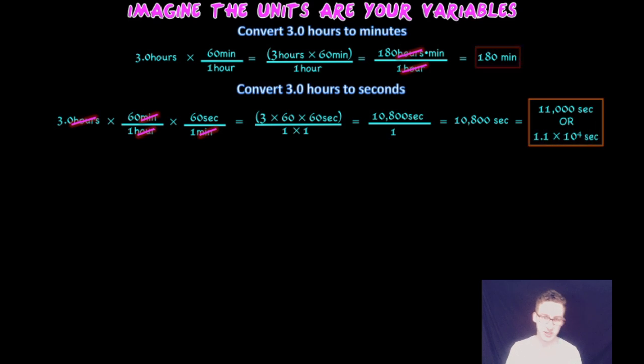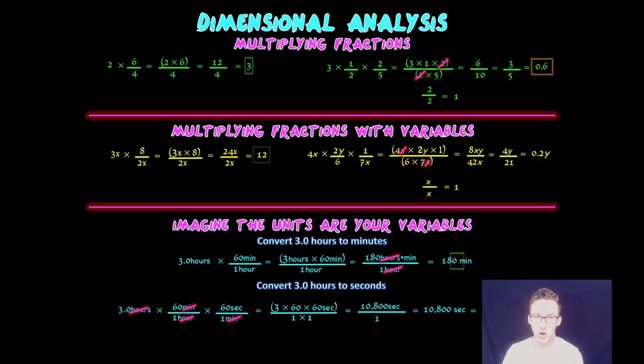60 minutes, one hour, 60 seconds, one minute. And you can create a conversion factor for two quantities that you know the relationship between. And then third, you ultimately want to set up your conversion so that the units that you start with cancel out and you end up with the units that you're looking for.